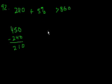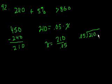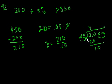$210 is 5% of what number? So you could say $210 equals 0.05 times x, and x will be her sales above $800. So x equals $210 divided by 0.05. 0.05 goes into $210. 5 goes into 21, 4 times 5 is 20. Bring down, 5 goes into 10 two times. 2 times 5 is 10. We're done.